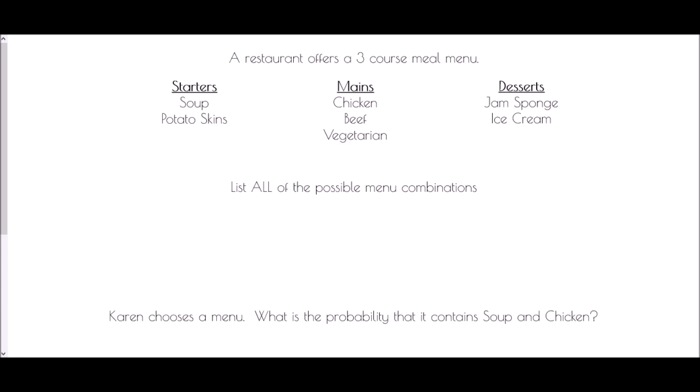Next we're going to look at a restaurant offering a three-course meal. The starters are soup or potato skins, mains are chicken, beef, or vegetarian, and desserts are jam sponge or ice cream. We want to list all the possible menu combinations. To do this quickly, we'll use shorthand: soup = S, potato skins = P, chicken = C, beef = B, vegetarian = V, jam sponge = J, and ice cream = I.